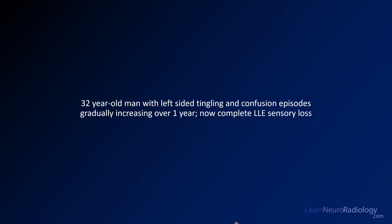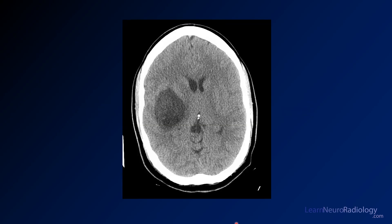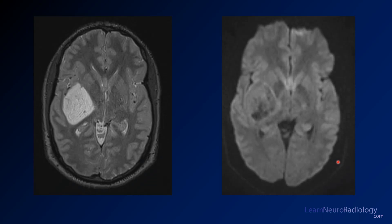For our next case, we have a 32-year-old man with left-sided tingling and confusion, gradually increasing, and now he has sensory loss. We'll start off with a CT. On the CT, what you'll see is centered in the right basal ganglia and insula — a relatively well-marginated low-density mass. There is mass effect; you see a little bit of midline shift where the third ventricle and septum pellucidum are deviated to the left. So you're concerned there's a tumor and you want to get an MRI.